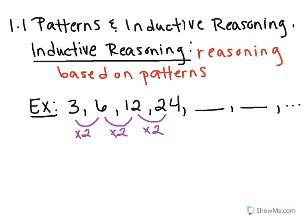So in order to find the next numbers, this pattern should stay continuous throughout every two numbers that I have. So 24 times 2 is going to give me 48, and 48 times 2 is going to give me 96. And this pattern will continue forever. This is just one kind of inductive reasoning that we're going to see. We may see some as well with pictures, so let's give one of those a try.